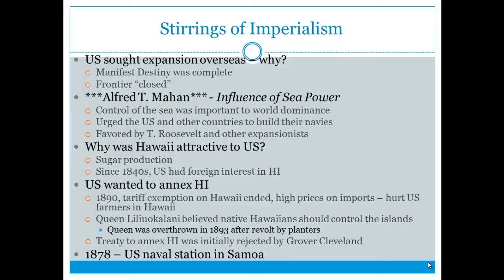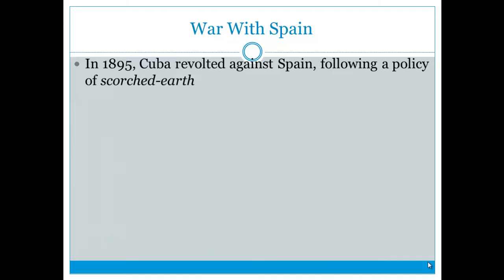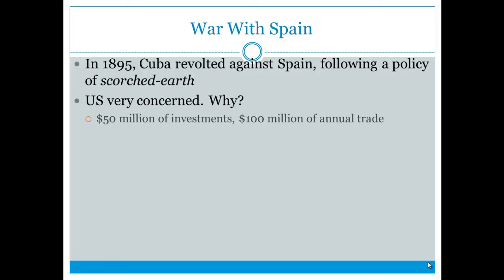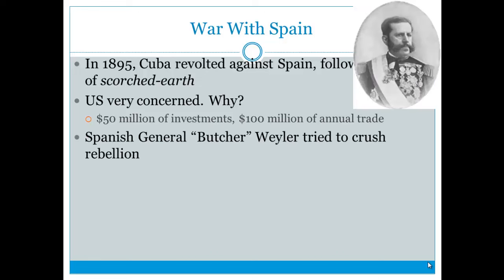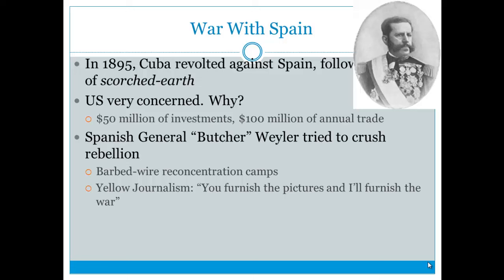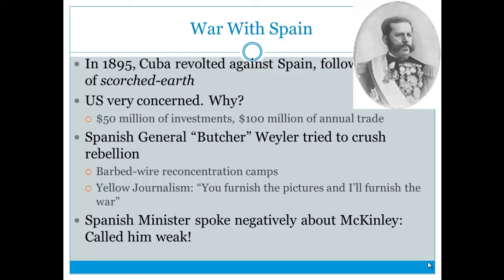In 1878, the U.S. set up a naval station in Samoa. In 1895, Cuba began revolting against Spain using a Scorched Earth Policy — destroying crops to hurt Spain economically. The U.S. was concerned because they had $50 million in investments and $100 million in annual trade with Cuba. Spanish General Butcher Weyler threw people into barbed-wire reconcentration camps. Yellow journalism from Hearst and Pulitzer inflamed public opinion, and the DeLome letter, in which a Spanish minister called McKinley weak, further angered Americans.